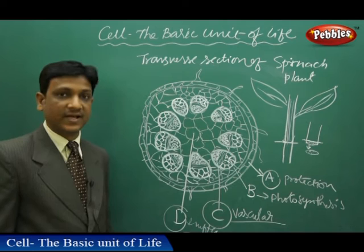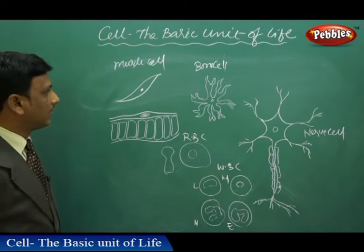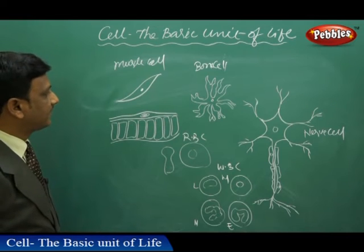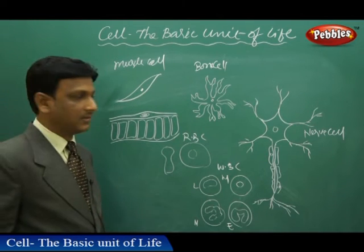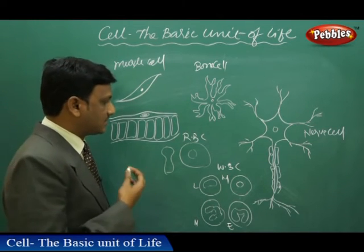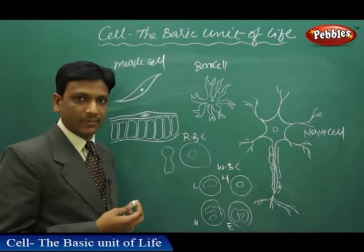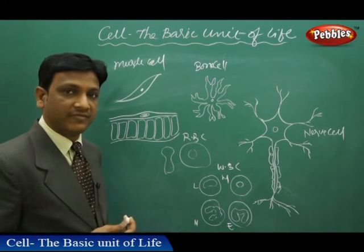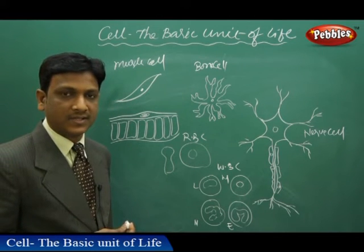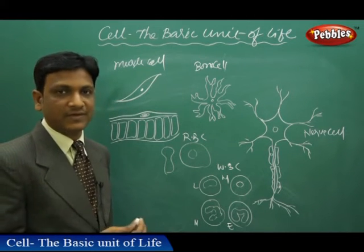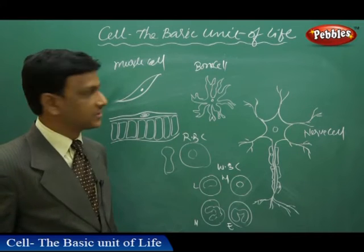Now let us see different kinds of animal cells. These are cells from the human body. We have different types of cells in different body parts which perform different functions.